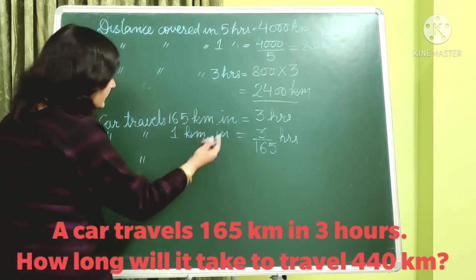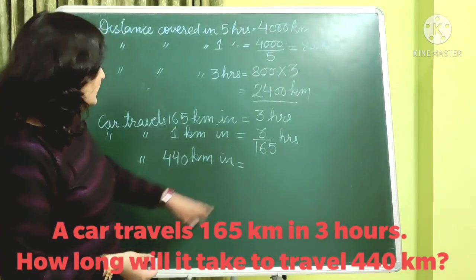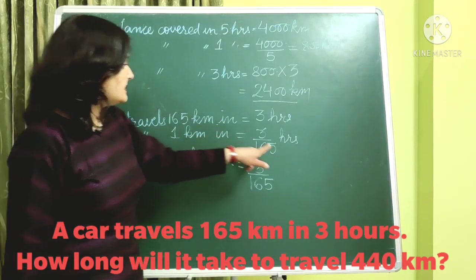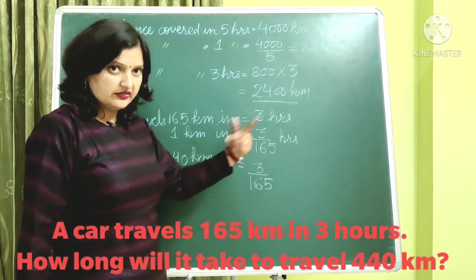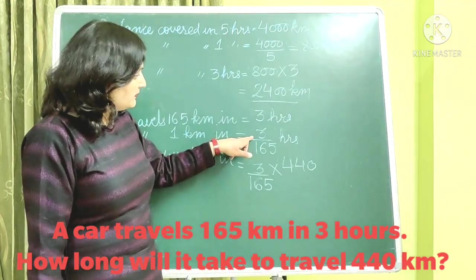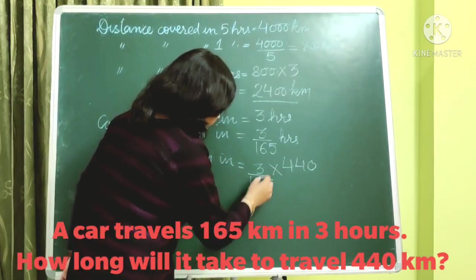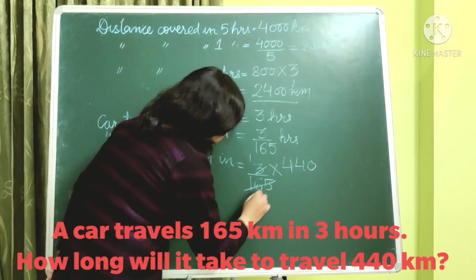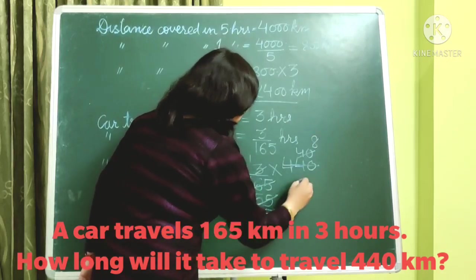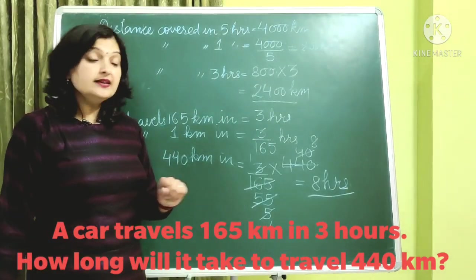You need to find how many hours it takes to travel 440 km. So you multiply 3 divided by 165 by 440. After cancellation — dividing and simplifying — the answer is 8 hours. So the car travels 440 km in 8 hours. Always remember to check what form your answer needs to be in — whether it is hours, cost, distance, etc.